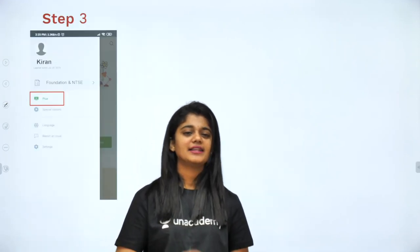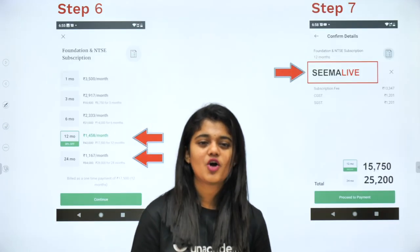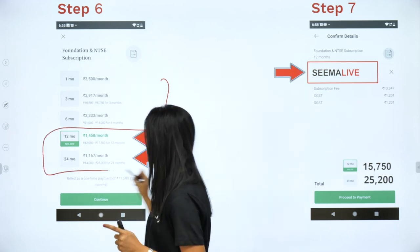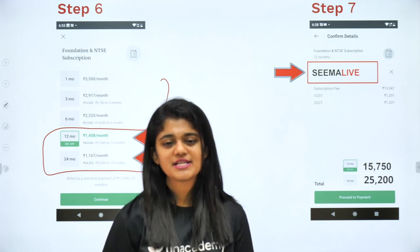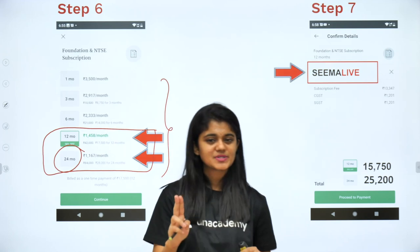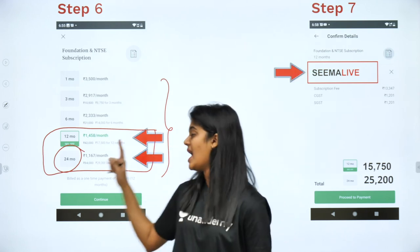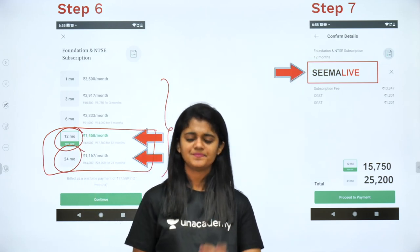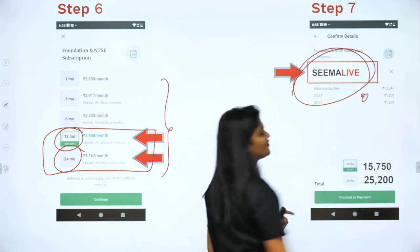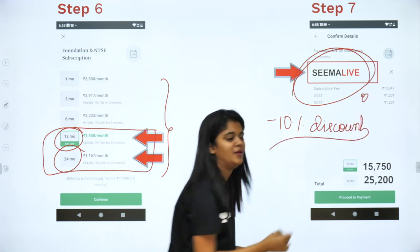Install the Unacademy Learning app, go to the Plus section, choose your goal as Foundation and NTSE, then click on 'Get Subscription'. Long-duration plans are very reasonable price-wise. 9th standard students can take a two-year subscription covering all lessons, concepts, and problems, while 10th standard students can take a one-year subscription. Using the referral code 'seema live' gives an additional 10% discount on all plans.